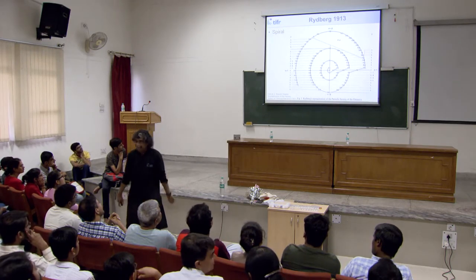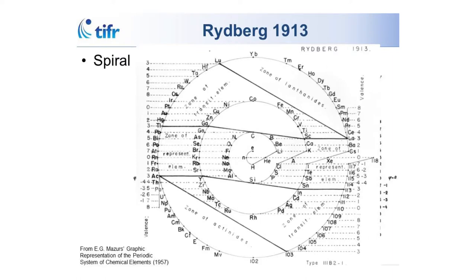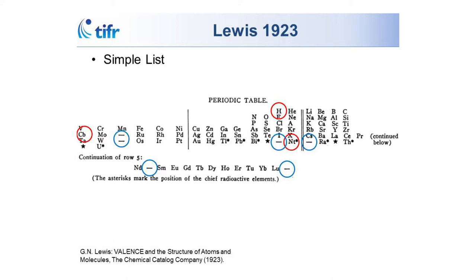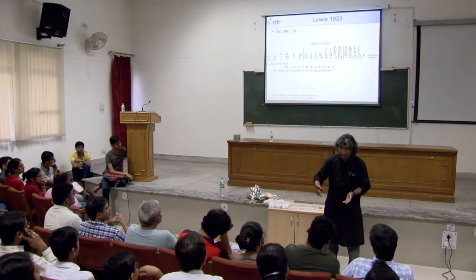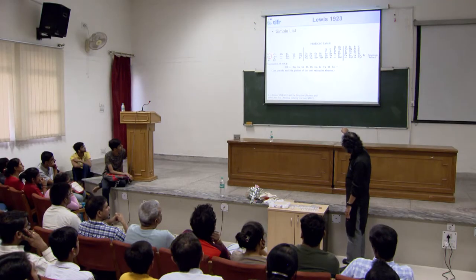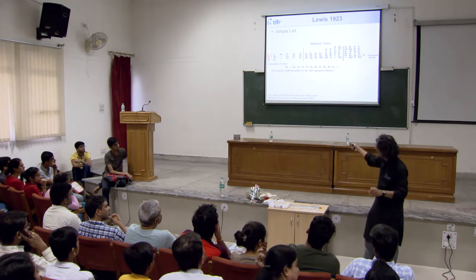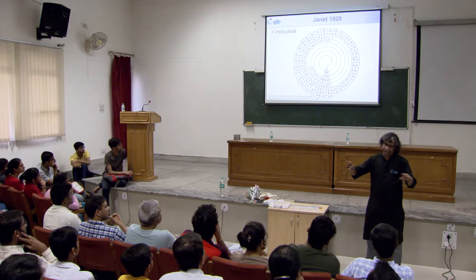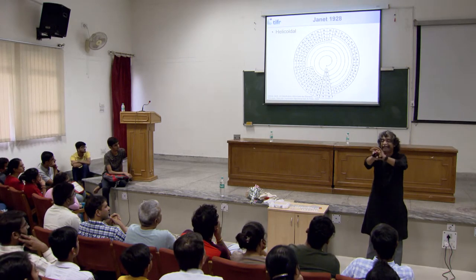Moving back to regular stuff: Rydberg of Rydberg's constant has a periodic table — he actually starts with electron, neutron, hydrogen, helium and goes around in circles. This is the CRC Handbook of 1917. Lewis of Lewis Acids and Bases has his periodic table — look where hydrogen is placed. You'll see some unfamiliar names: in the noble gases, argon is 'A', xenon is 'X', and NT is niton — radon went through many name changes including niton and thoron. Out here, niobium was called columbium for a long time in the US because they wanted to name it after Columbia University.